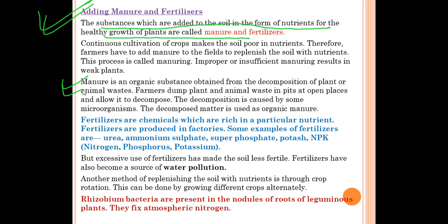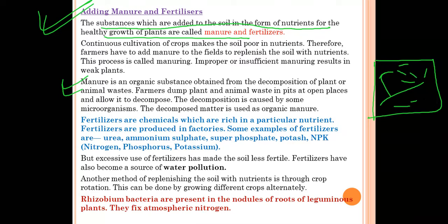Manure is an organic substance obtained from the decomposition of plant and animal waste. Farmers dump plant and animal waste in pits at open places and allow it to decompose. Decomposition is caused by microorganisms. The microorganisms break the waste products into small pieces, and after a few days the waste is changed into manure, which farmers can add to their farmland for healthy plant growth.